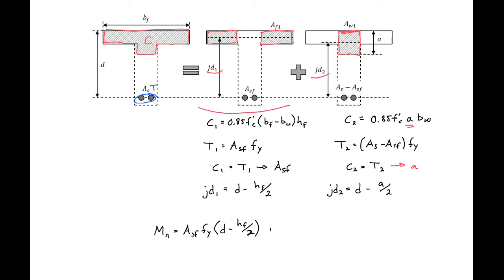And then add in our second component, so as minus asf times fy times d minus a over 2.